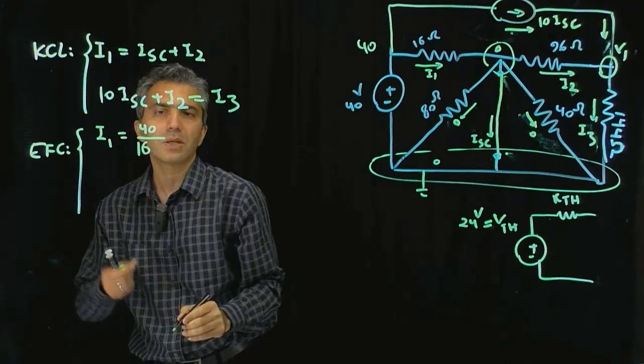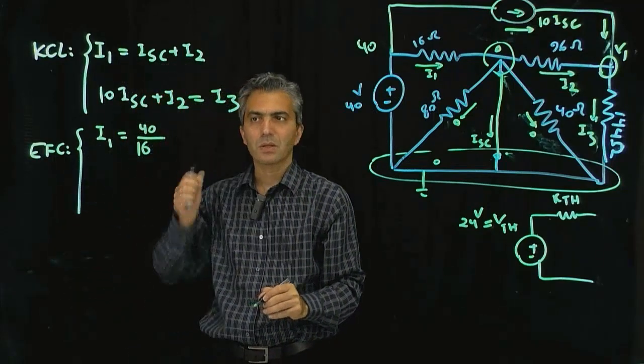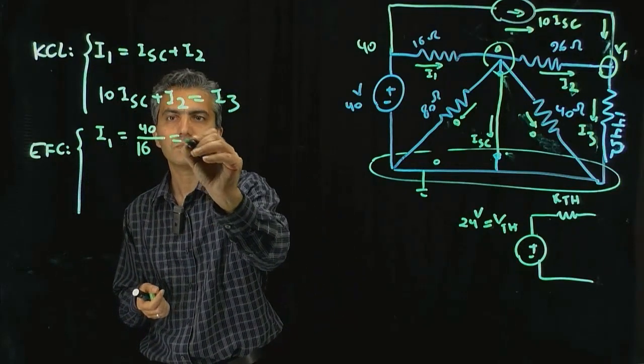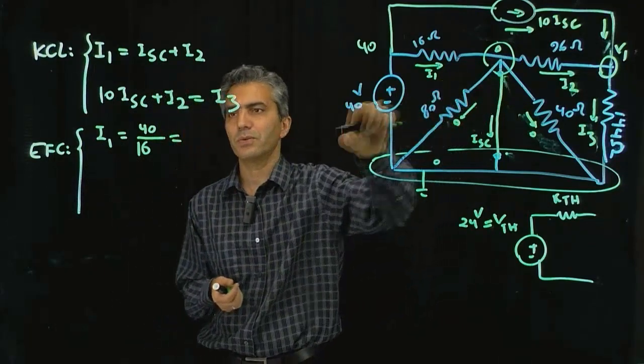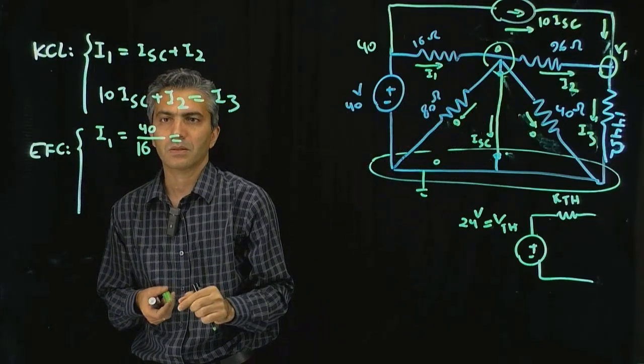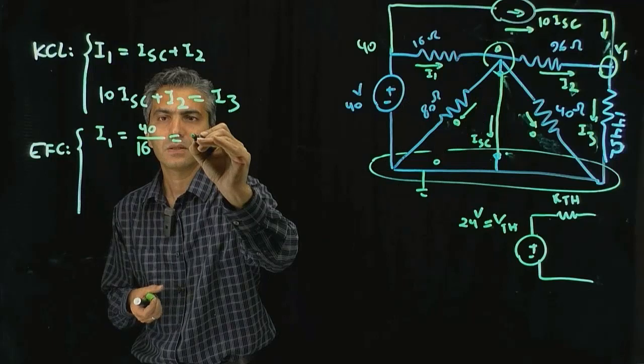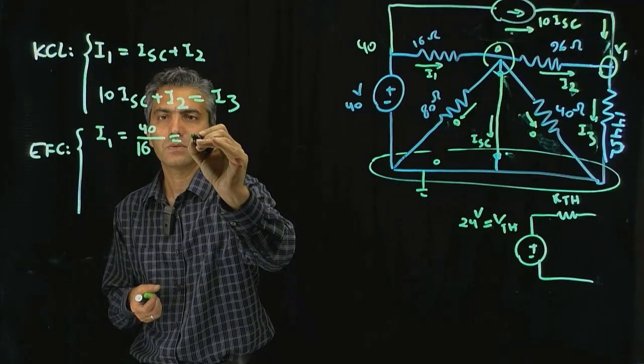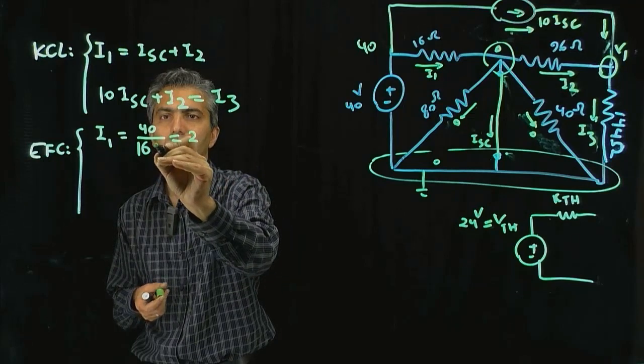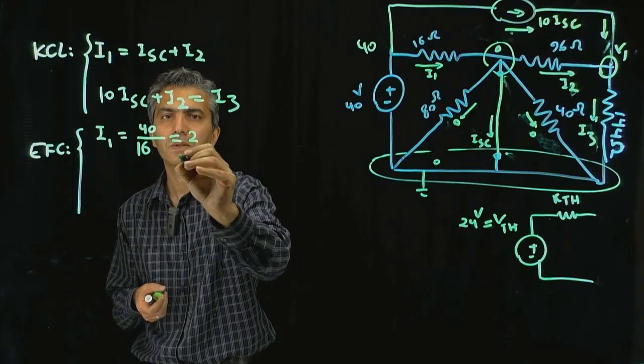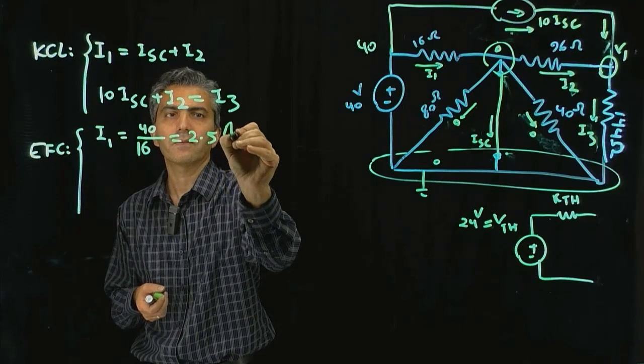That immediately actually gives me the value. I don't have to do anything for that one, because that's 0 volts. That can be calculated. That's 2.5 amps.